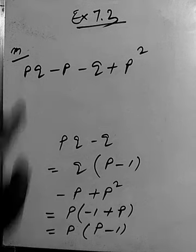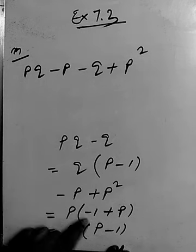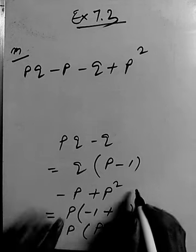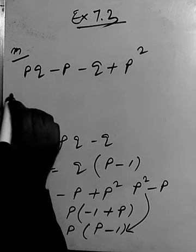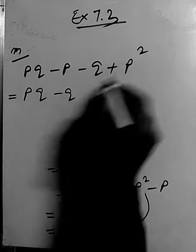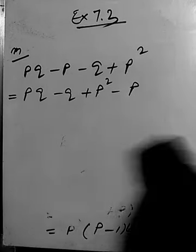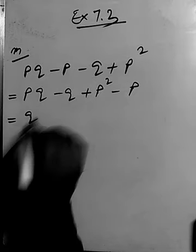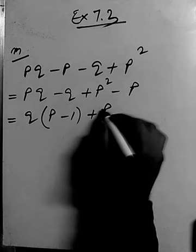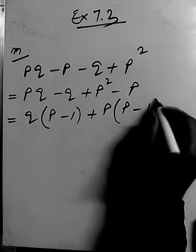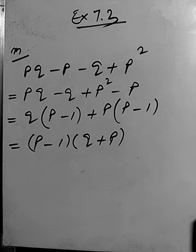To summarize the correct grouping: first and third terms give Q(B minus 1), and second and last terms give B(B minus 1). Taking (B minus 1) as the common factor, the remaining terms are Q plus B. So the final answer is (B minus 1)(Q plus B). We'll move to the next and last question.